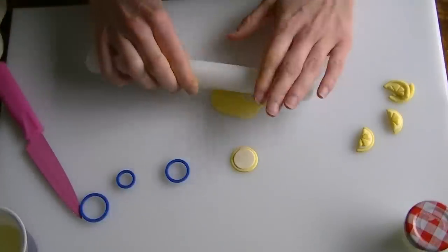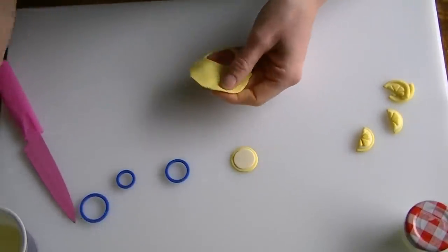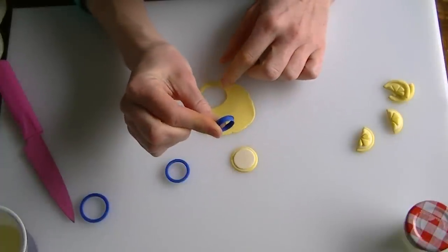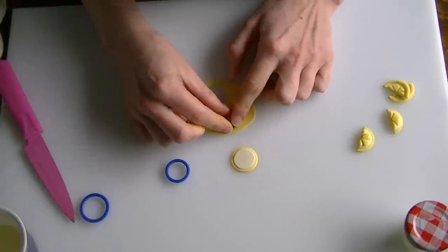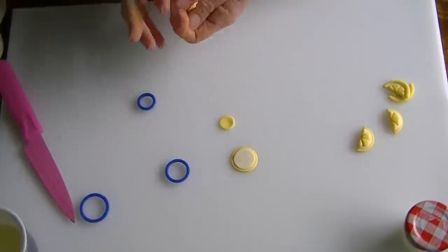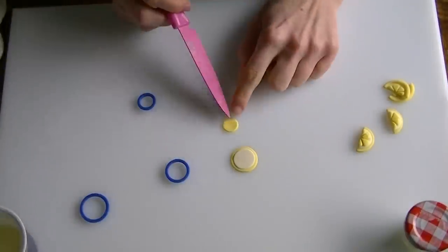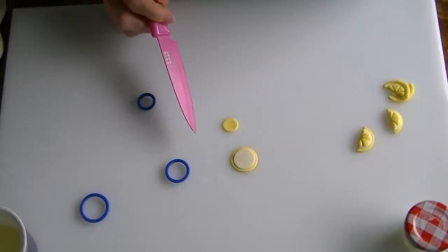Now taking this again I'm just going to roll it a tiny bit thinner. I'm going to take my smallest cutter and cut out a small circle like that. Now what I'm going to do is this is going to create the little lemon segments in the middle.